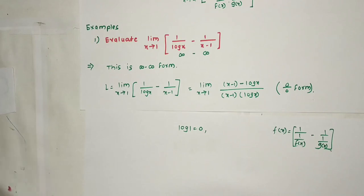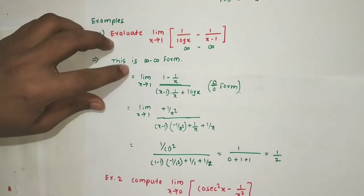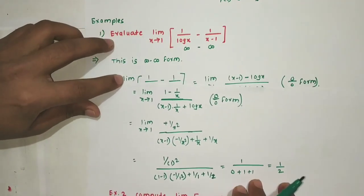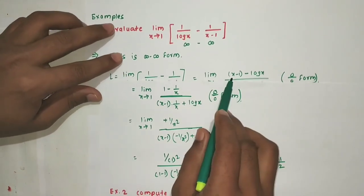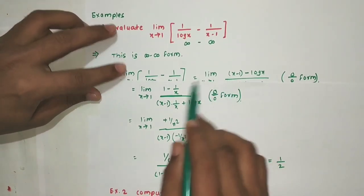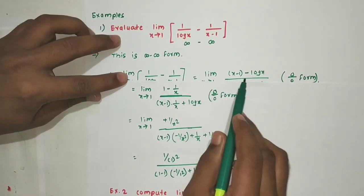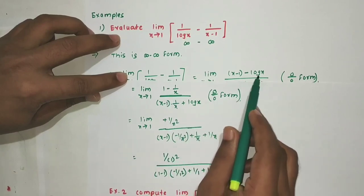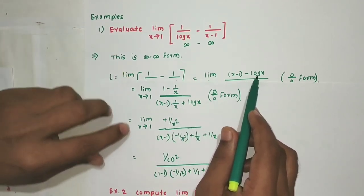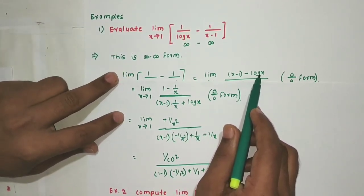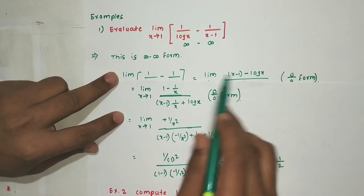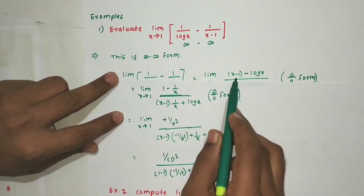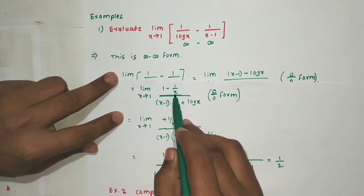We apply L'Hôpital's rule. The derivative of the numerator: derivative of (x-1) is 1, derivative of (-ln x) is -1/x, giving (1 - 1/x). The derivative of the denominator uses the product rule.